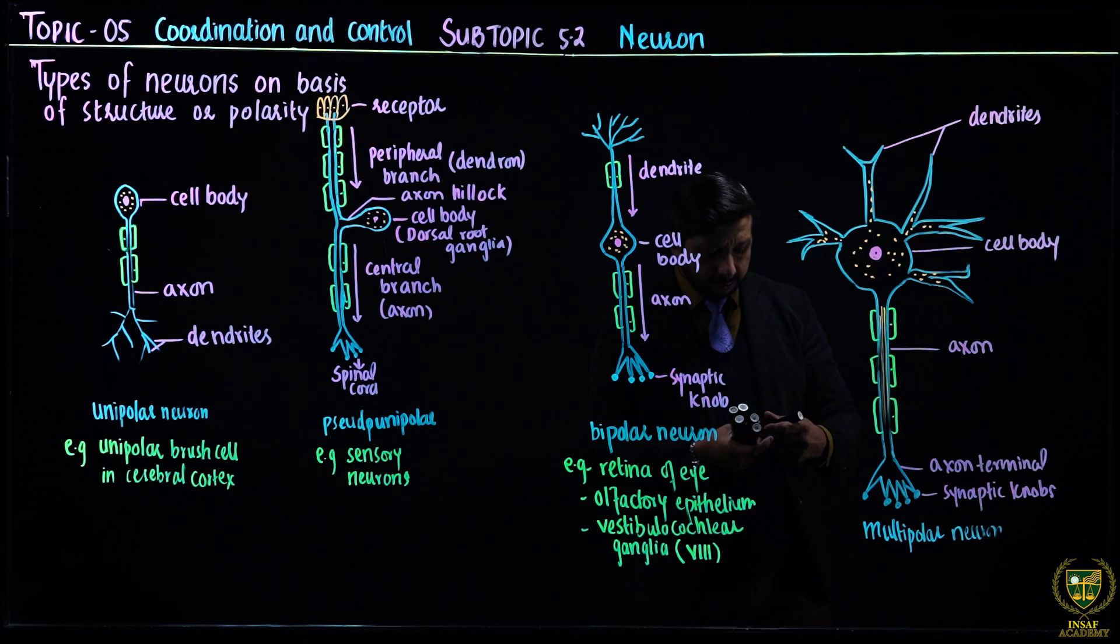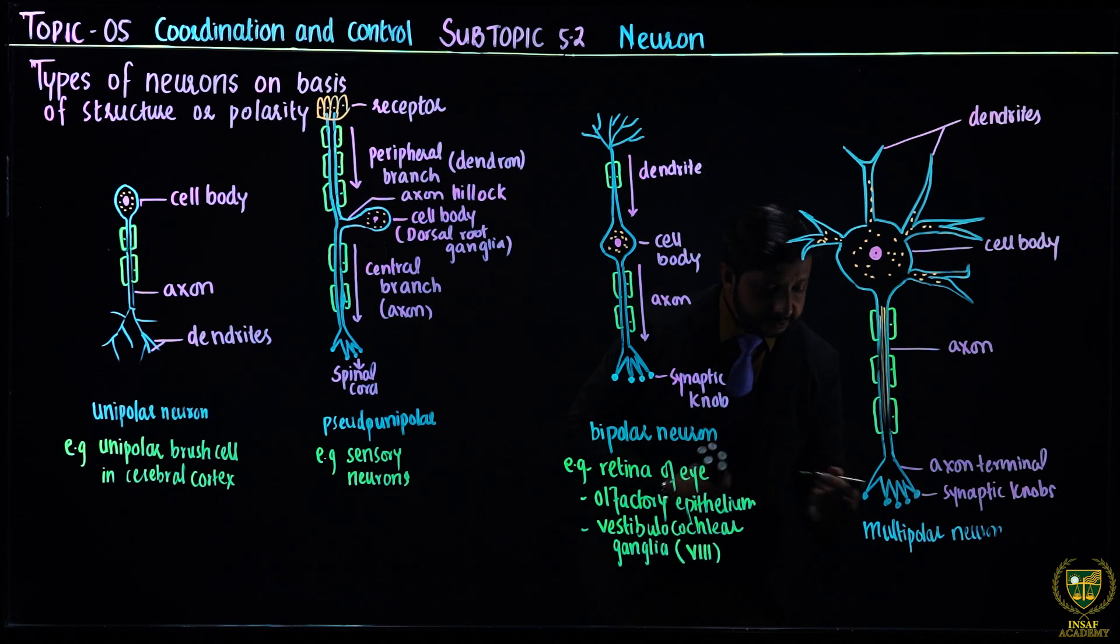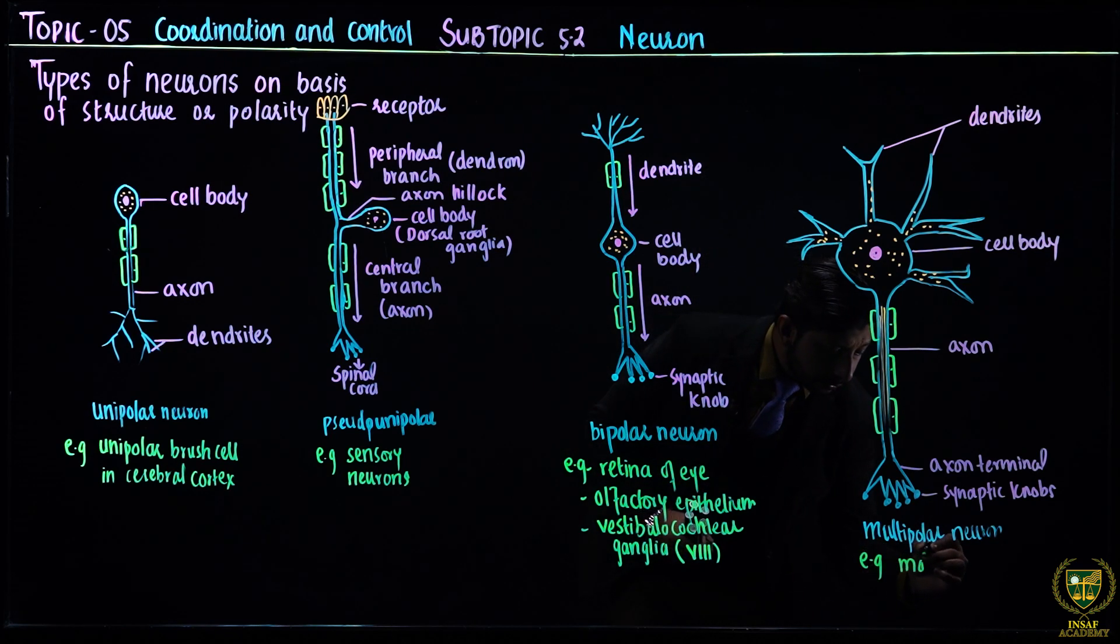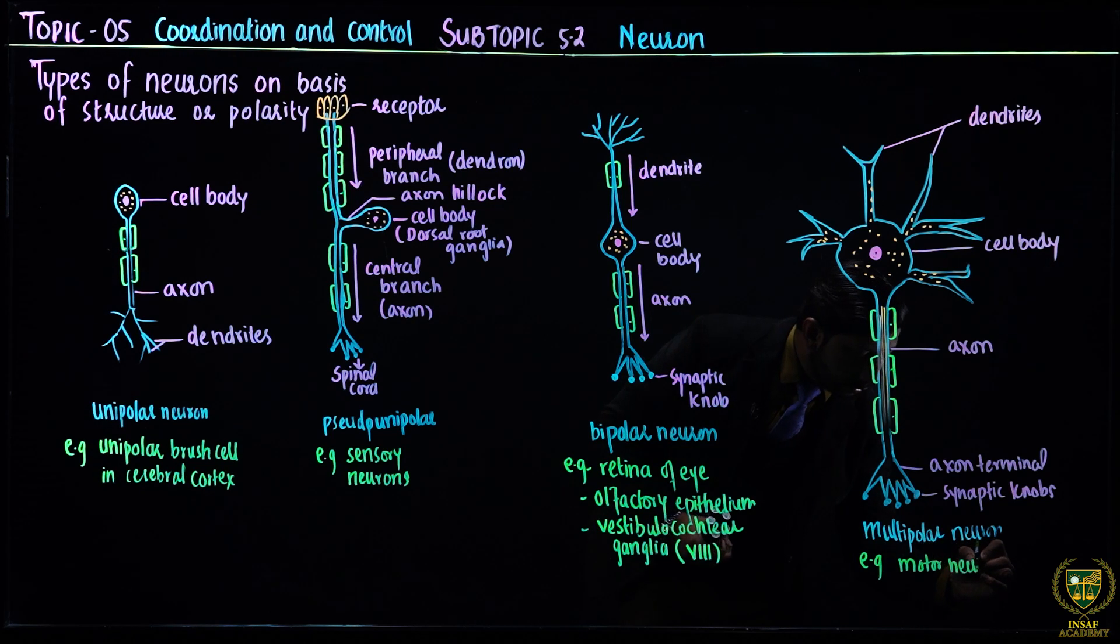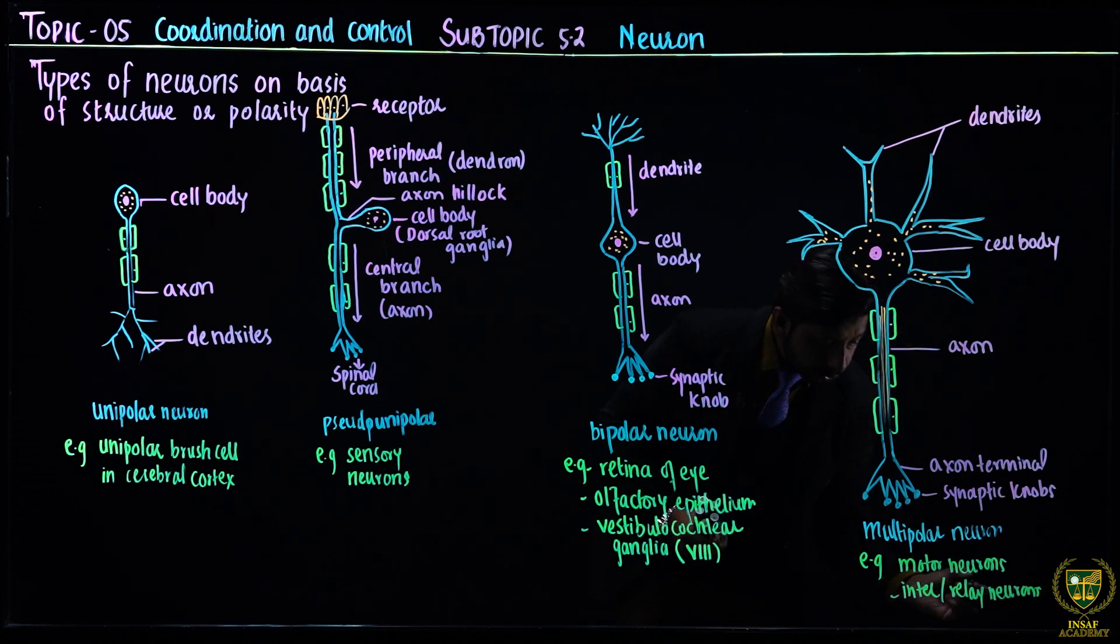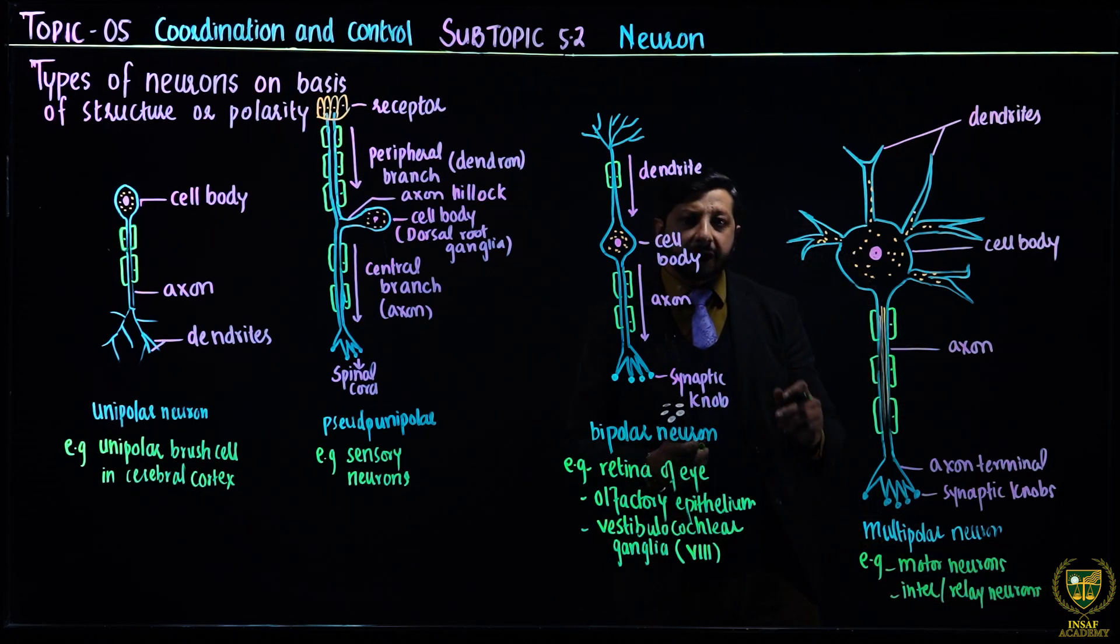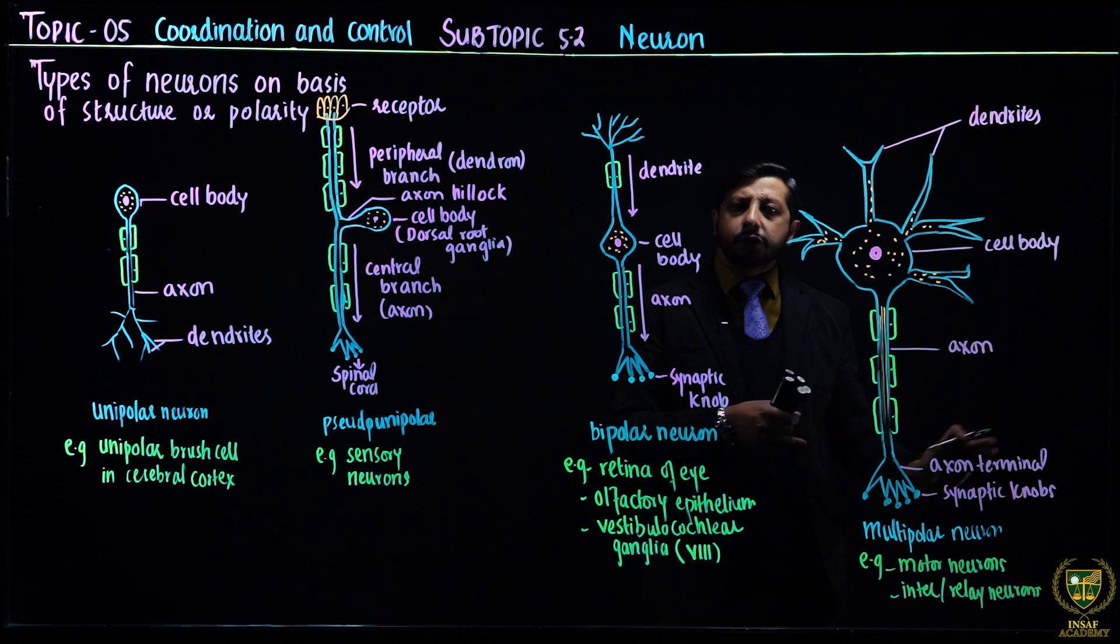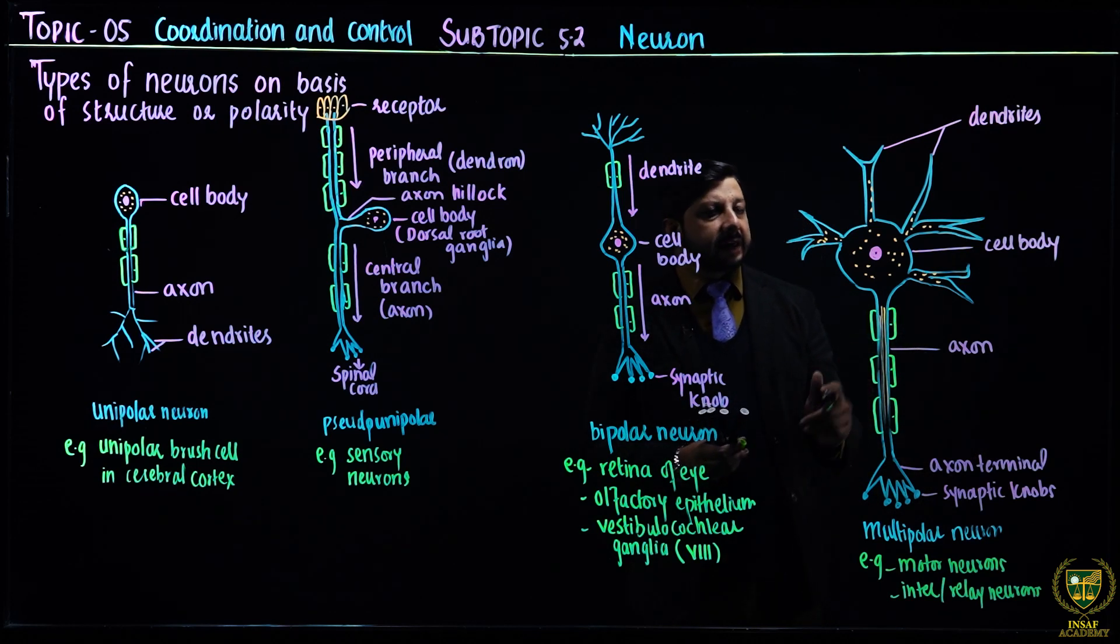This is a typical motor neuron. These are the dendrites, this is the cell body, and this is the axon with axon terminal and synaptic knobs. The myelination is present, but the axon terminal is unmyelinated. This is an example of multipolar neuron. The examples are the motor neurons and the inter or relay neurons. These are neurons in the CNS and neurons which carry messages away from CNS to the effectors.